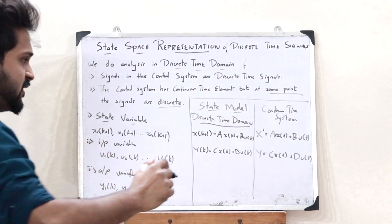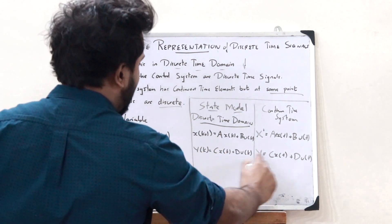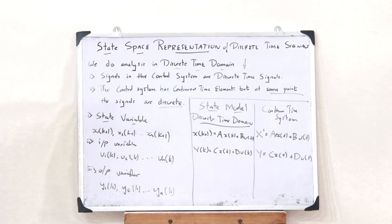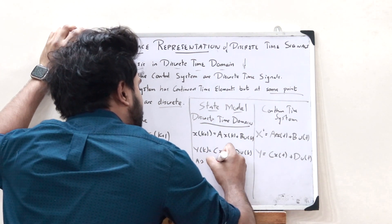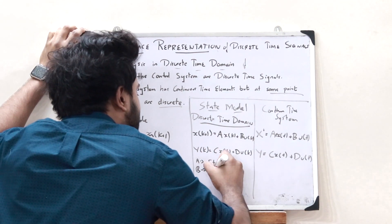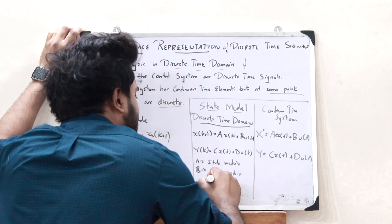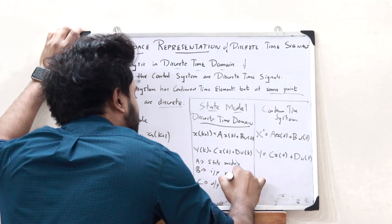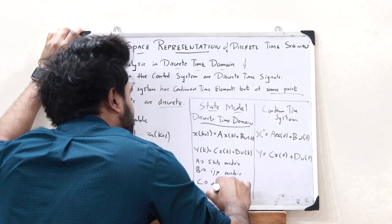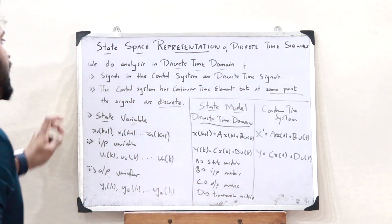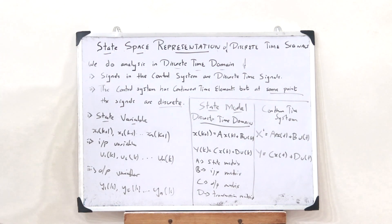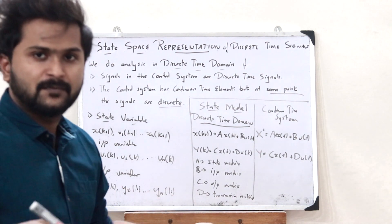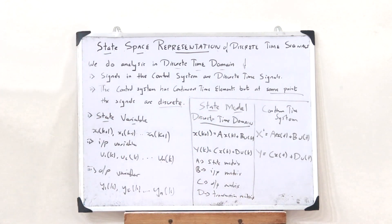The state model consists of two equations: the state equation and the output equation. Here, A is the state matrix, B is the input matrix, C is the output matrix, and D is the transmission matrix. This is simply how you represent a particular control system using state space analysis in the discrete time domain. As simple as that — there's nothing more to it.